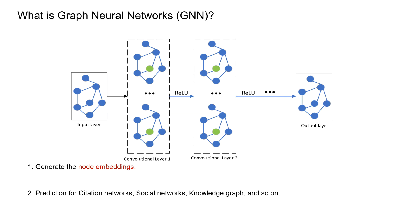As we know, GNNs are designed to work with graph data, generating node embeddings that capture the property of nodes, positions, and roles. GNNs are widely used for tasks like citation network prediction, social network analysis, and so on.